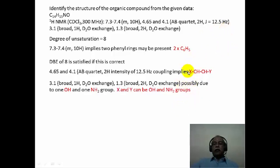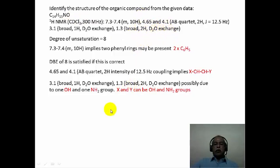We need to identify the two groups X and Y. The signal at 3.1 ppm — broad, one hydrogen intensity, D2O exchangeable — most likely corresponds to an OH functional group since oxygen is present in the molecule. The signal at 1.3 ppm — broad, two hydrogen intensity, D2O exchangeable — with nitrogen present in the molecule, most likely corresponds to NH2. So X and Y can be OH and NH2 respectively in this particular fragment.